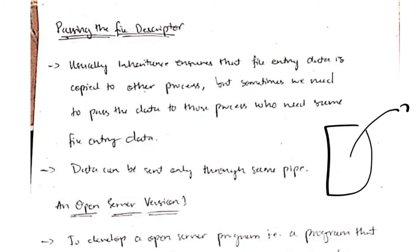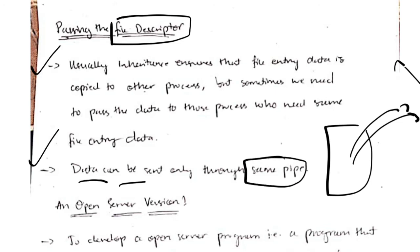Sometimes we want to pass the same file to the other process because it's also performing the same task. At that time we can pass the file descriptor which has the information of the file, and it has to be transferred using the same pipe only. These are two key points which you need to keep in mind.